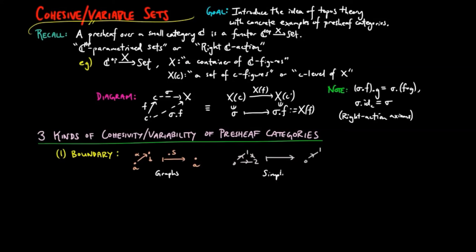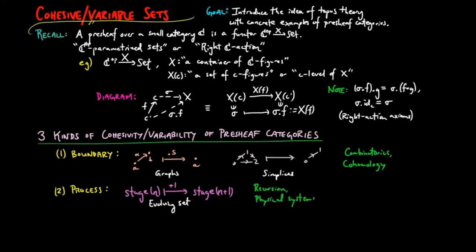The second type is of process. We think of the objects in C as stages in time and the morphisms as processes between these stages, so a state N evolves to a state N plus 1. This type of variability is used in recursion theory and physical systems.